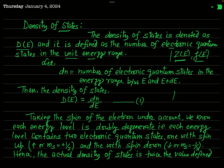Consider that the energy of our electron lies between E and E + dE, where dE is the energy range. Let dN be the number of electronic quantum states between energy E and E + dE. Since in the energy range dE the number of states is dN, for unit energy range this is dN/dE. According to the definition, D(E) = dN/dE.